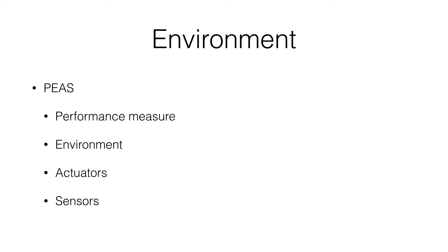The actuators are the outputs of the agent program, or what actions it can take. In the thermostat example, it's able to turn the heat on and off, maybe with variable fan speeds. Finally, the sensors are the inputs to the agent program — what measurements and data it has access to when it makes decisions. A thermostat can sense the ambient temperature, or maybe it has multiple thermometers for indoor and outdoor temperature, a barometer, or a humidity sensor. Importantly, the sensors might differ from the environment — even though the thermostat might be operating in Blacksburg, the agent might have no direct way of knowing that since its sensors don't include a GPS.